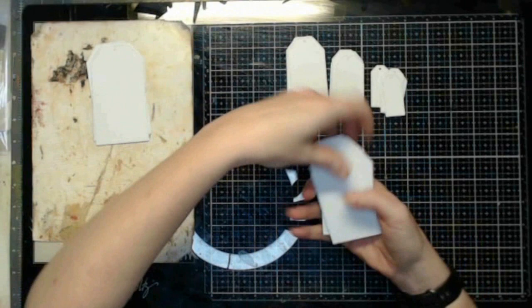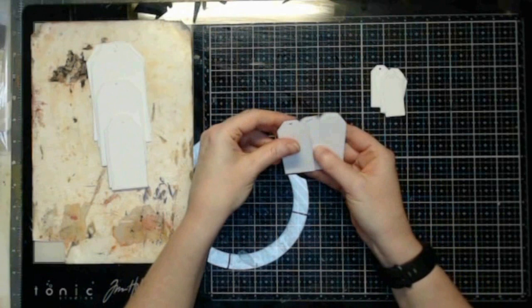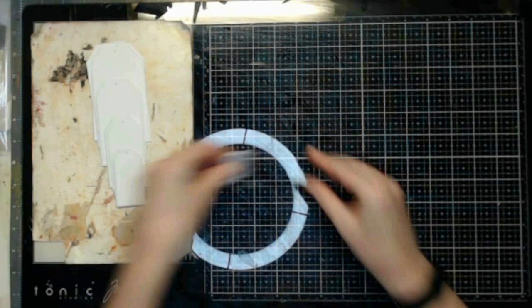So I have four of the largest ones, four of the second largest, five of the middle-sized ones, four of the next to smallest, and I believe seven of the smallest tags out of a single sheet of cardstock.